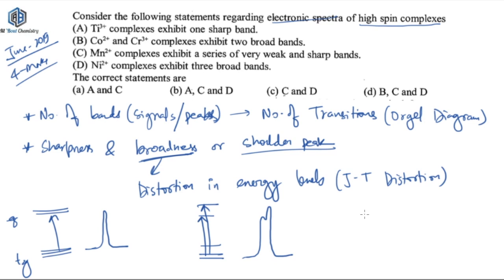There are many factors affecting the broadness and sharpness of peaks, including differences in energy levels. But for d-orbital coordination complexes specifically, the broadness depends on Jahn-Teller distortion. The number of peaks you get comes from the Orgel diagram. So let's go through all of these complexes and see what kind of peaks each one gives.